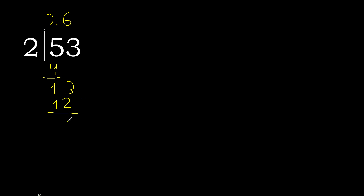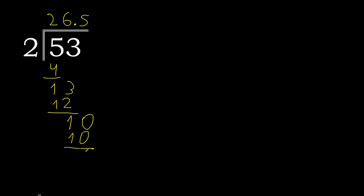Subtract 1. There is no number that goes down, therefore complete — always complete with 0. And here with a decimal point: 2 multiplied by 6 is 12 — too big. 2 multiplied by 5 is 10. Subtract 0. Therefore finish: 53 divided by 2 is 26.5.